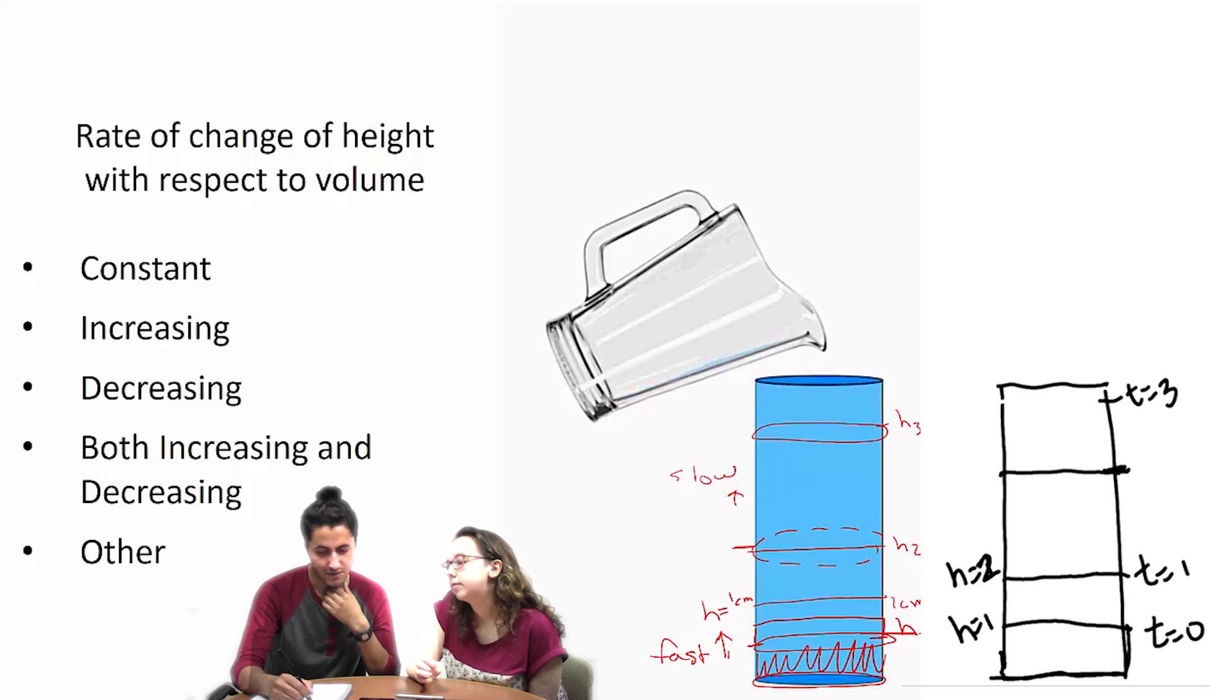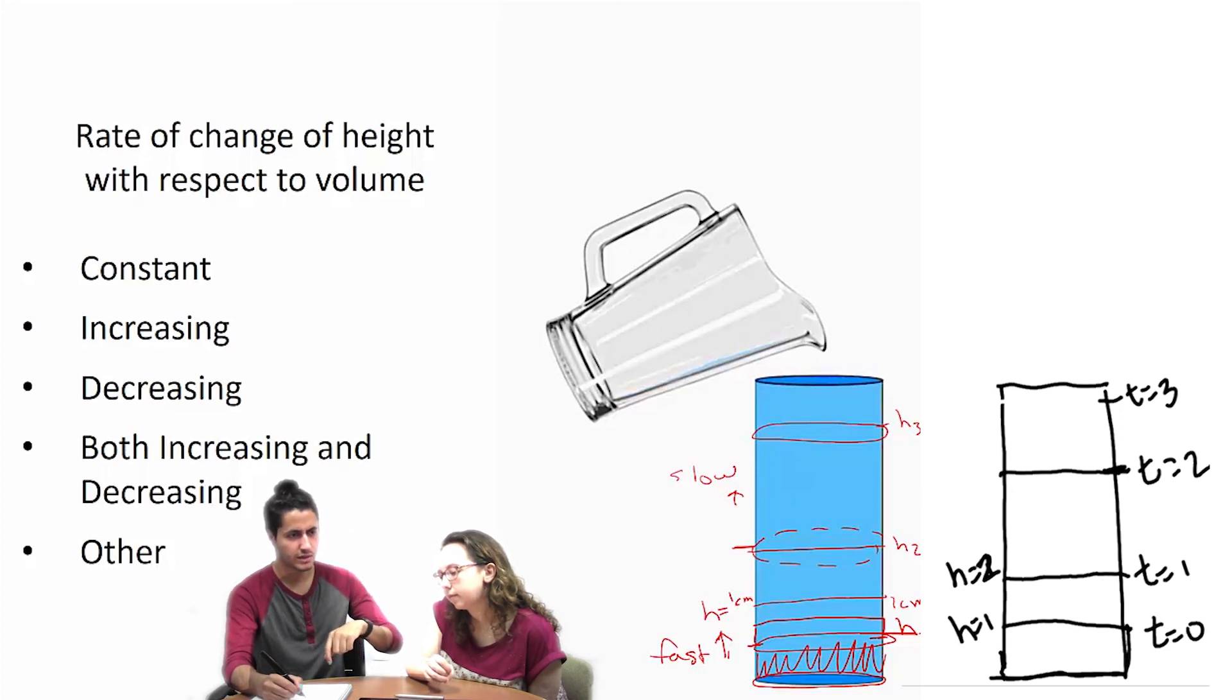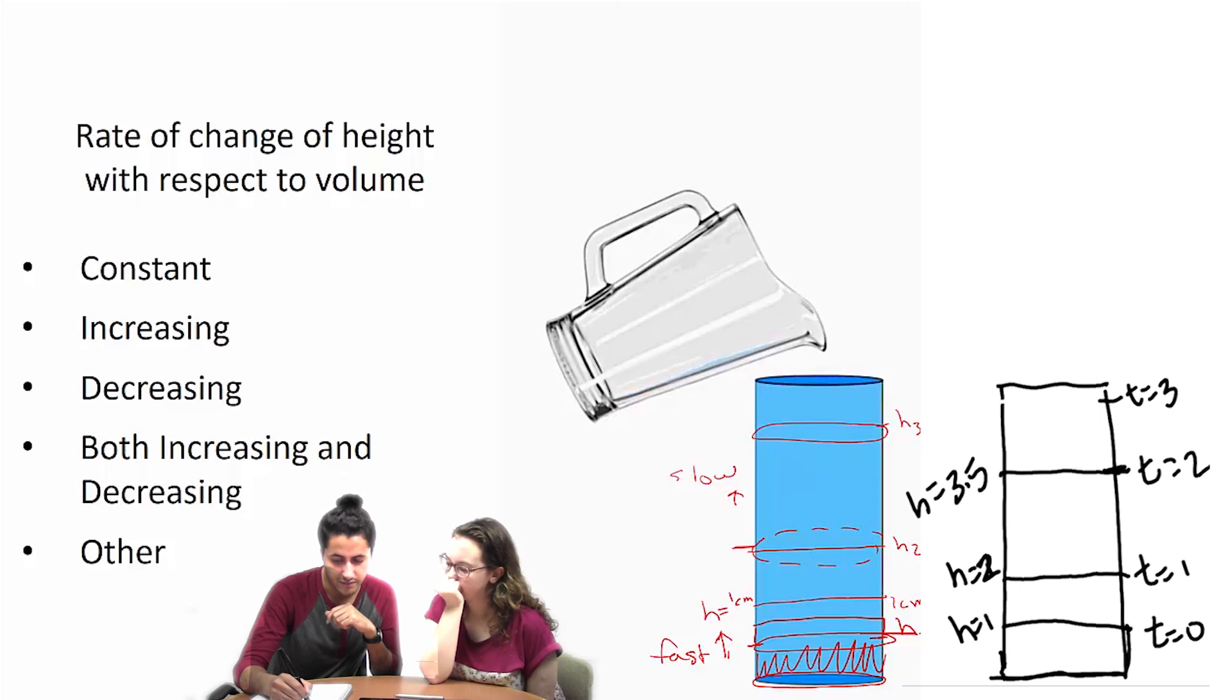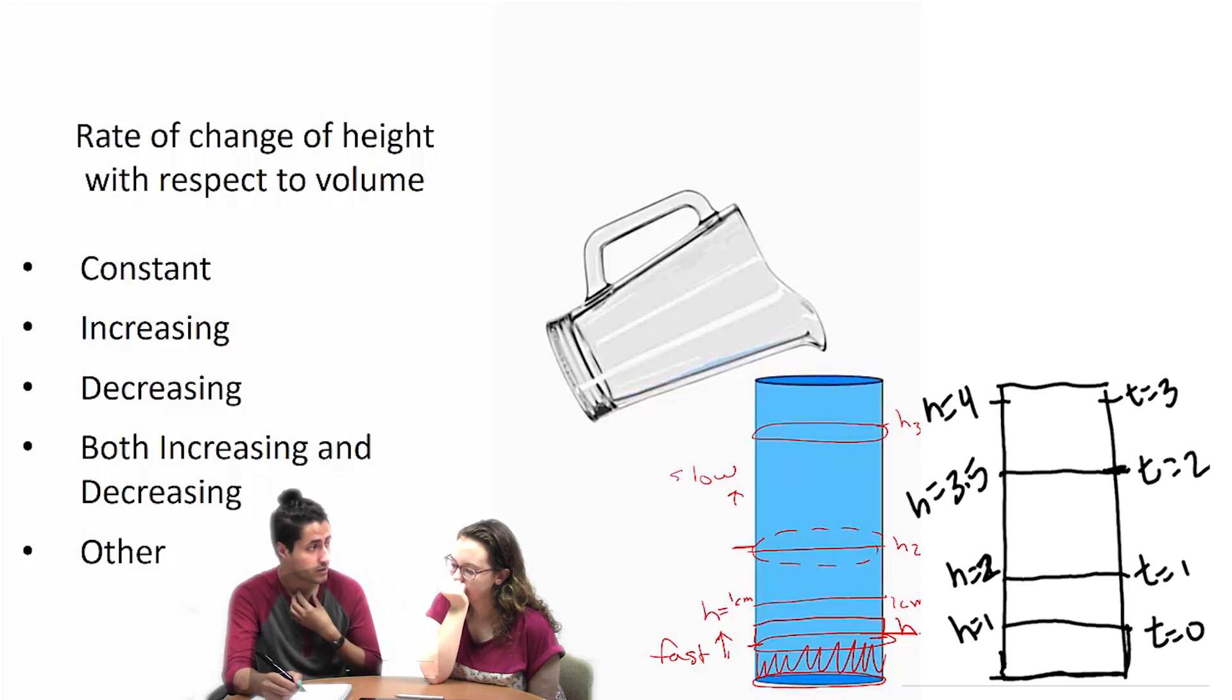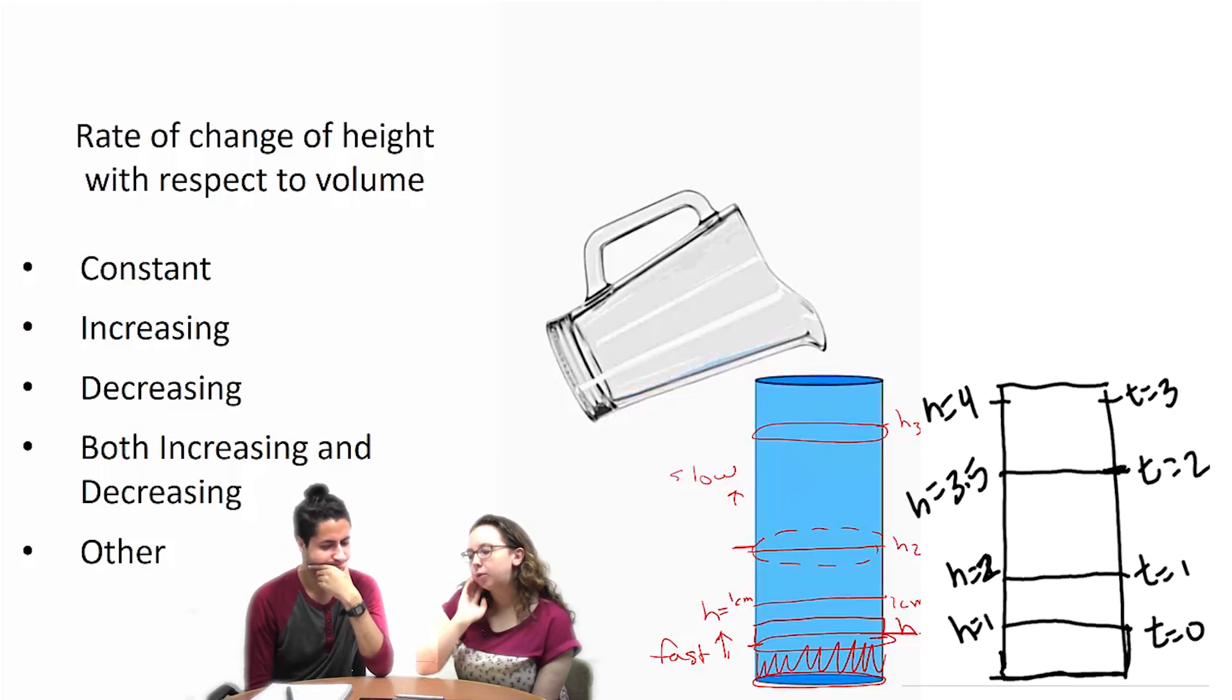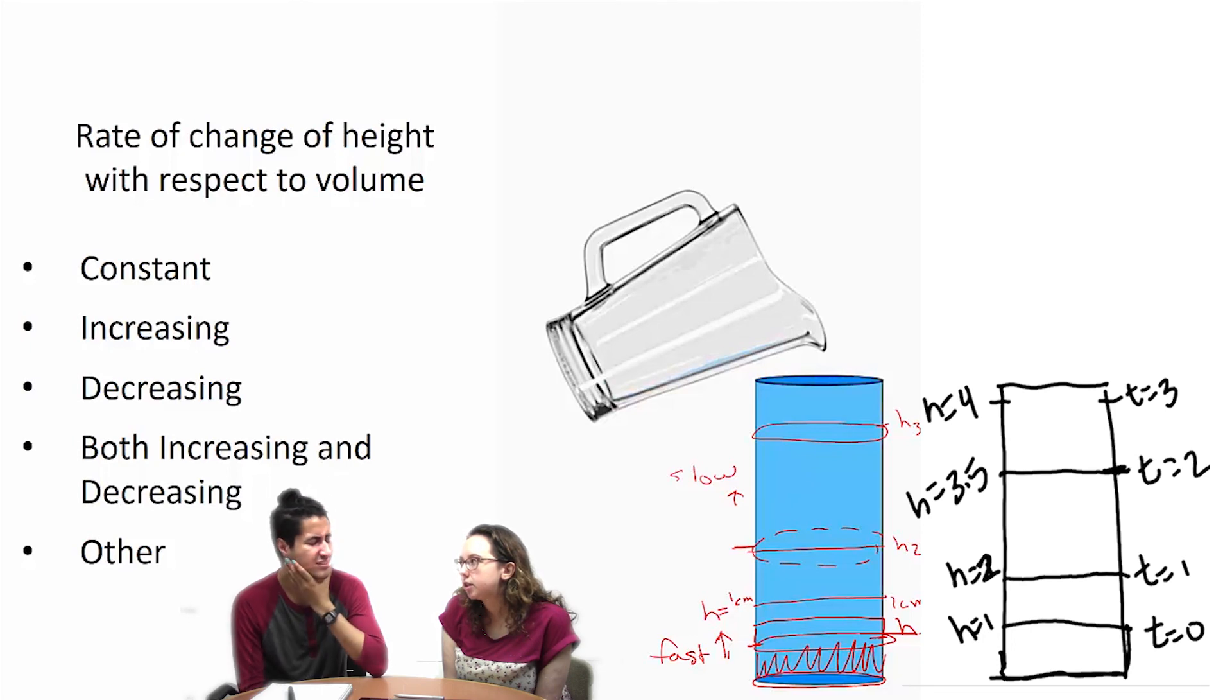So I'm thinking maybe if it's at time two, then with the faster pour, there should be more water. So this might be 3.5. But then up here, at t3, it might have only been four. So I agree with it's constantly through, but then it gets faster and slower. So is that more going back to our first thinking that it's both increasing and decreasing? I think so. Okay.